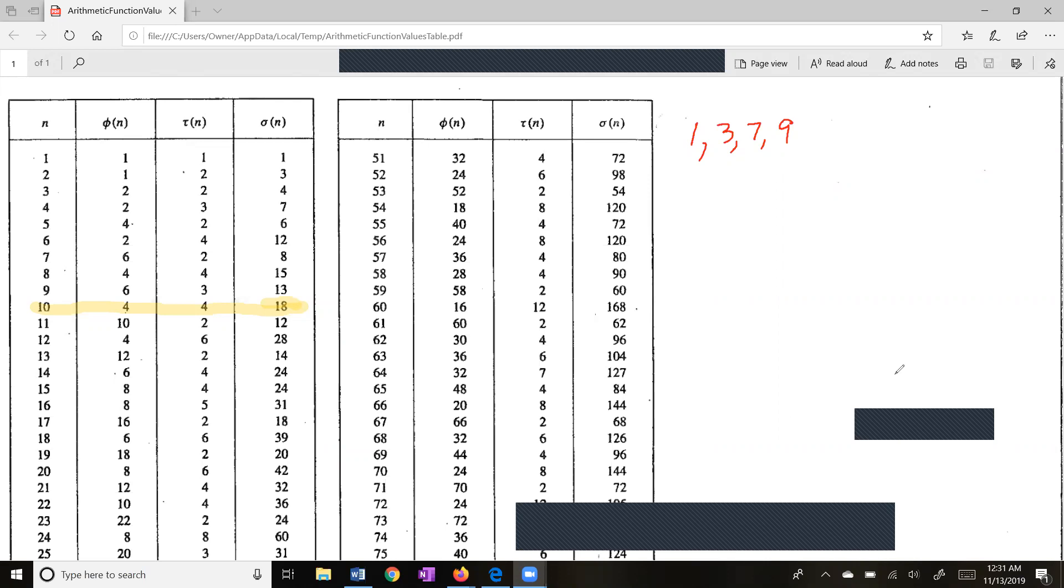Tau of n is the number of divisors of 10. So the divisors are 1 and 10, 2 and 5. And we see that we have four of those. And sigma of n is the sum of the divisors. 1 plus 2 plus 5 plus 10 is 18. Sigma means sum.